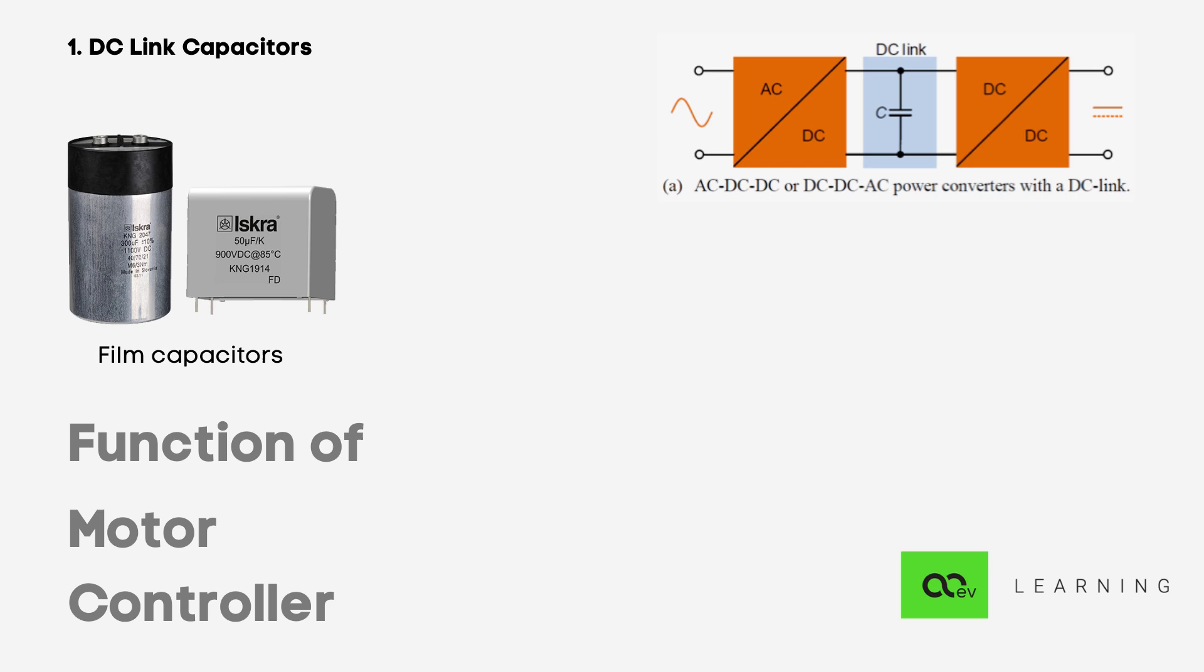Generally, film capacitors are used to effect. Since their stray quantities are negligible, it creates a viable alternative. By stray quantities, I mean the equivalent series resistance and the equivalent series inductance.